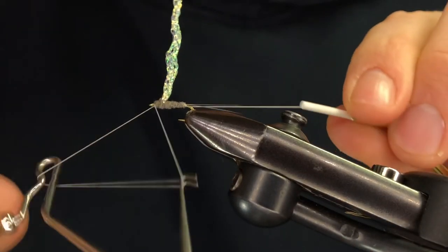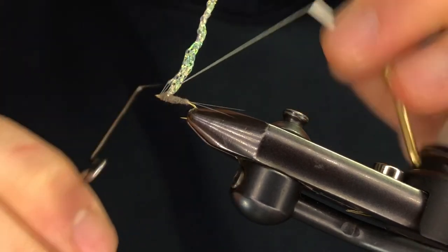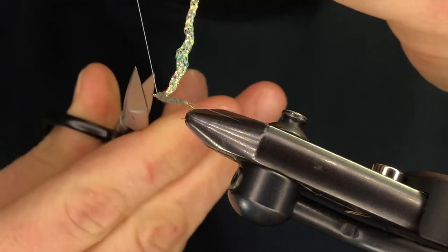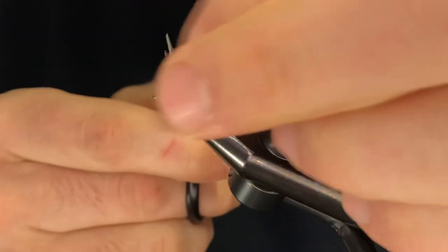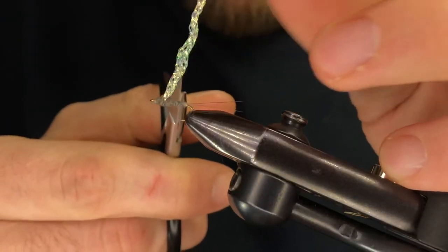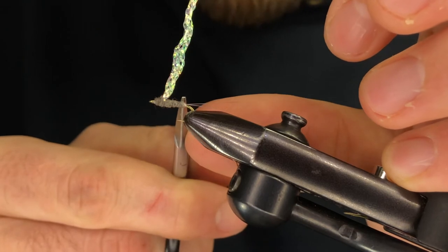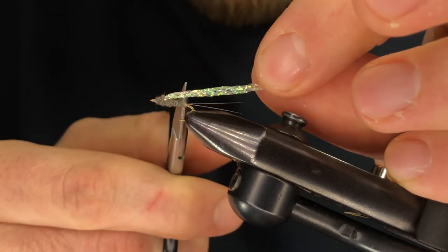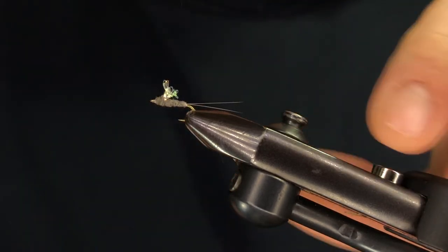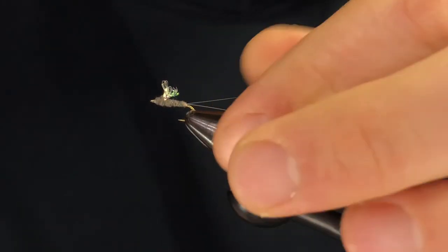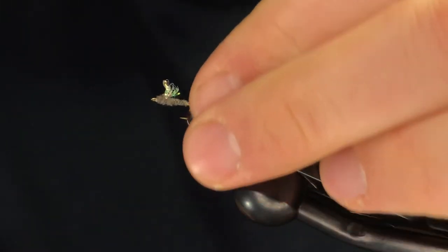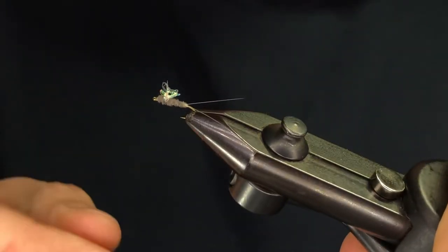Bring in your whip finisher. Three, four turn whip finish is all you will need. Trim off the excess. Now with this wing, I like to bring my scissors to the back of the body and bring this down. Trim it right there. Make sure you're tight and your tails are still attached and splayed out nicely.